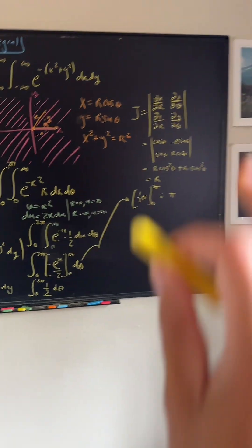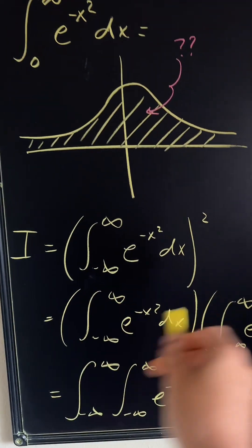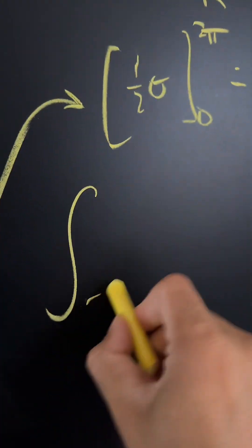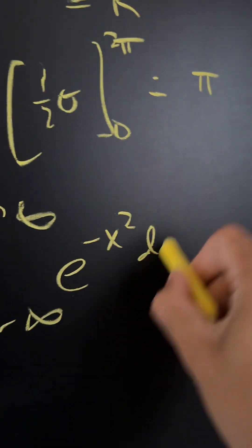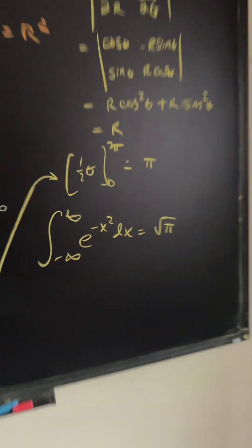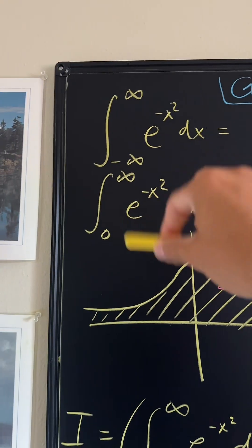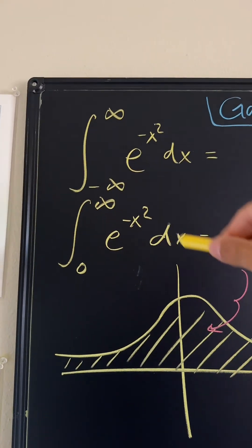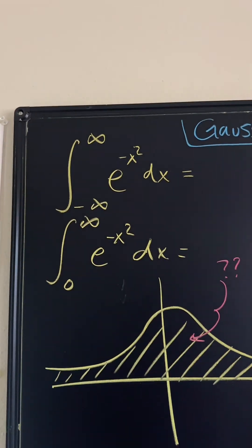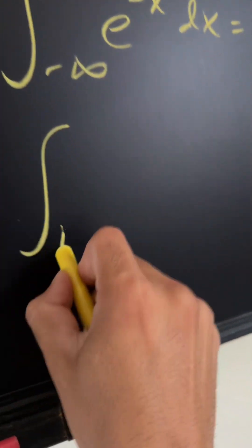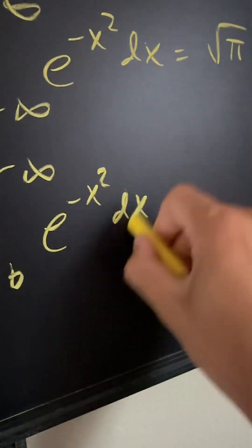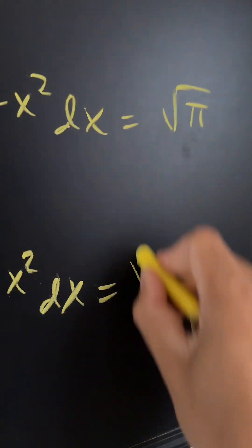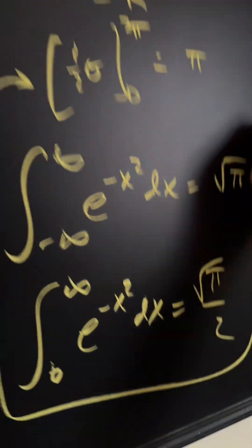We are almost done. Pi equals I squared — the original integral squared — so taking the square root tells us that the original integral of e to the negative x squared with respect to x equals the square root of pi. This is amazing. Now, because this function is even, the integral from zero to infinity is just half the total amount, meaning the integral from zero to infinity of e to the negative x squared dx equals square root of pi over two. And that is how you find the Gaussian integral.